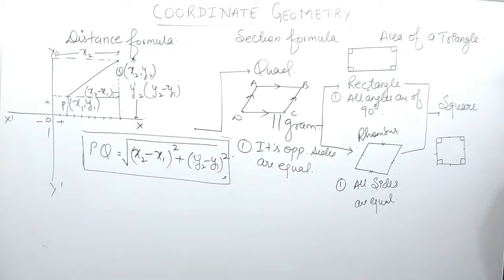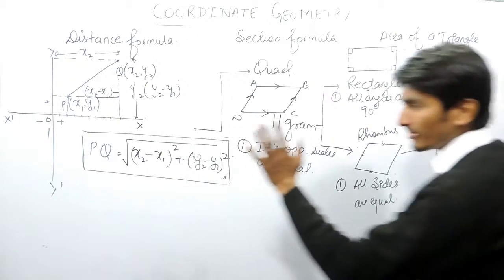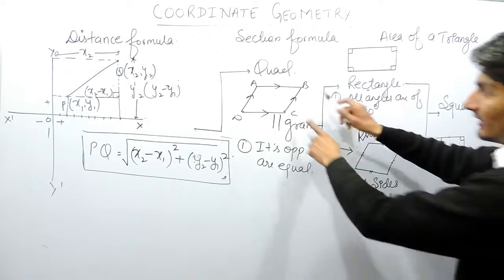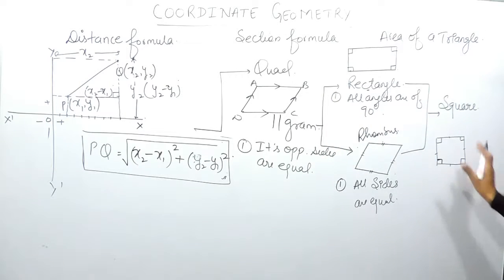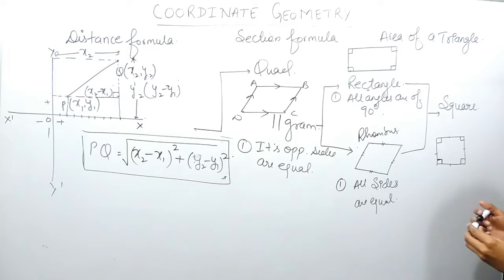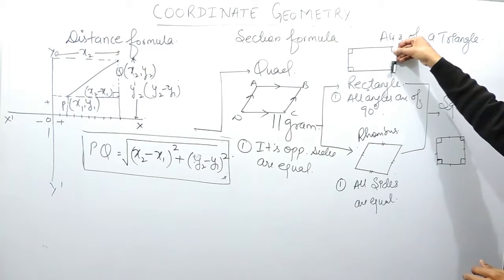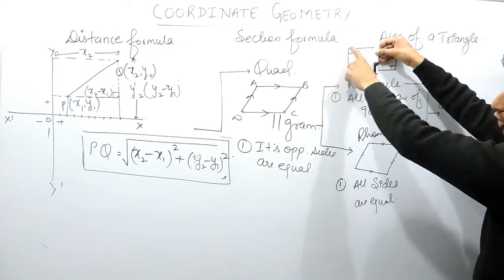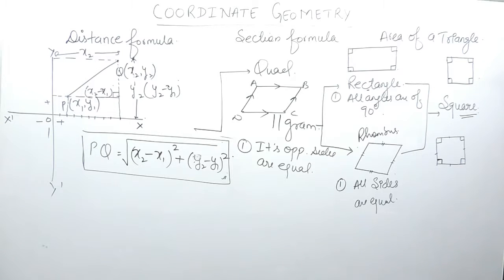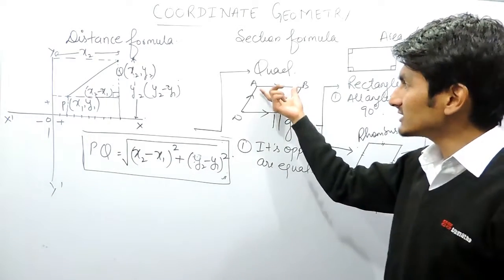To prove a square using the distance formula, you have to prove that all four sides are equal, and then prove that one angle is 90 degrees. With rhombus I can make a square, and similarly with a rectangle, if I shift the sides so that all sides are equal, I can also form a square. So a square has all sides equal plus all angles of 90 degrees.